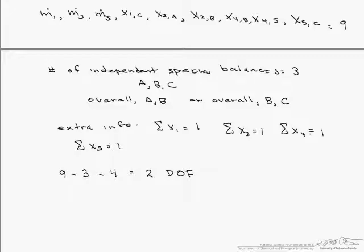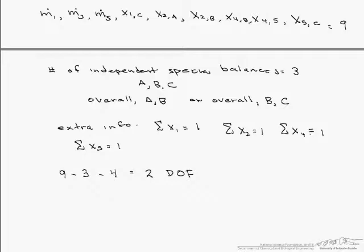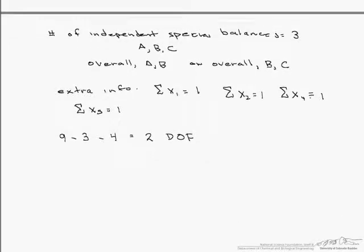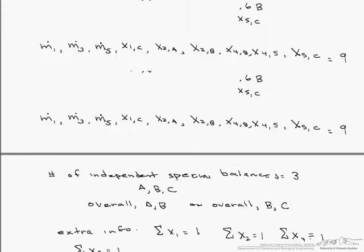Now one thing that we can do to make it easier is use those constraints that sum of the mass fractions has to equal 1 to already solve for some of our unknowns. So we will start with x1c. And again let's go to this picture.